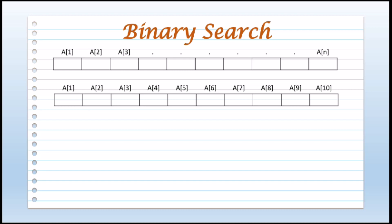Our given problem is to determine whether a given searching element is present in the list or not. From the list of elements which are in increasing order, we can find whether a particular number is present or not by using binary search. This can be implemented by using divide and conquer strategy.